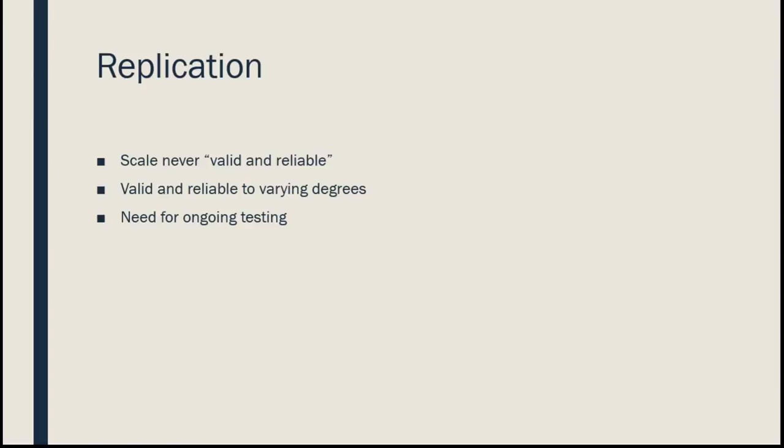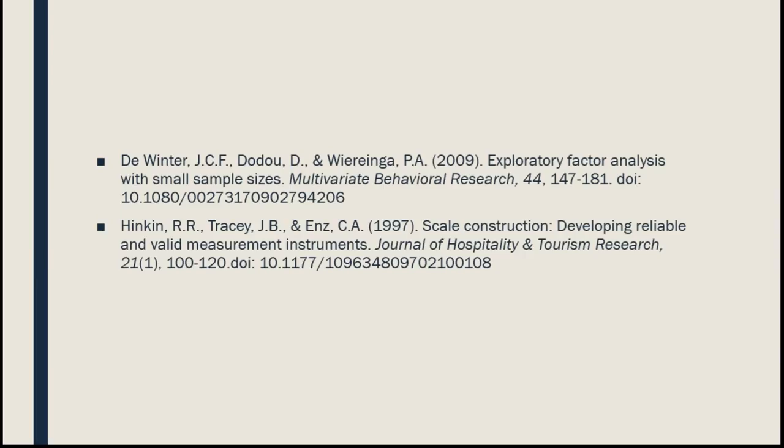Finally, we need to replicate. Just because we've tested it once doesn't mean it's valid and reliable. We'd never say a scale is valid and reliable until the end of time — we say it's been valid and reliable in this administration. Validity and reliability vary from population to population and administration to administration, so we need ongoing testing. These are a couple of resources I've drawn from throughout the lecture, especially the Hinkin article, which is a pretty good overview of scale development and is accessible through LCC.